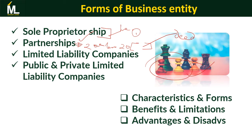The partnership deed defines the contribution of each person and how they will share profits or losses. For example, if you contribute 20,000, your proportion of that contribution to the total partnership determines what share of the profit you will earn. We will go into more detail in the topic on partnerships, but that's a good background for now.